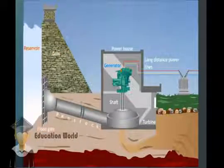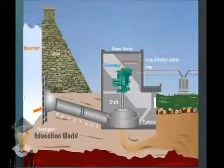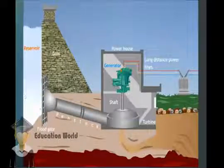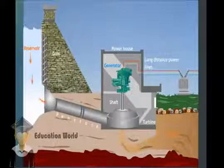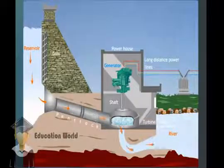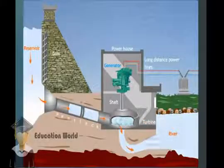At the bottom of the dam, there is a floodgate. Water flows through the penstock and rotates the turbine. The flowing water rotates the turbine, which is placed at the end of the penstock.